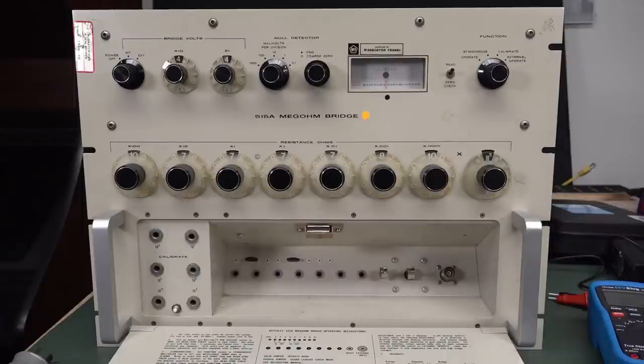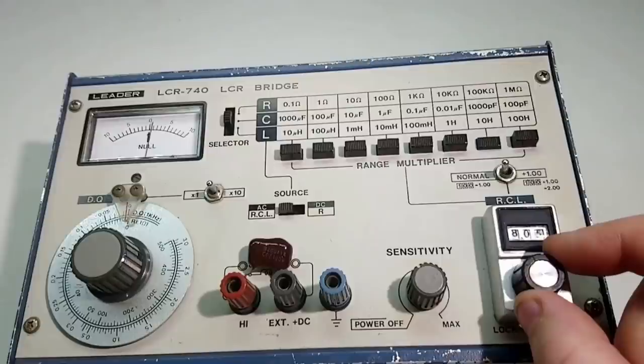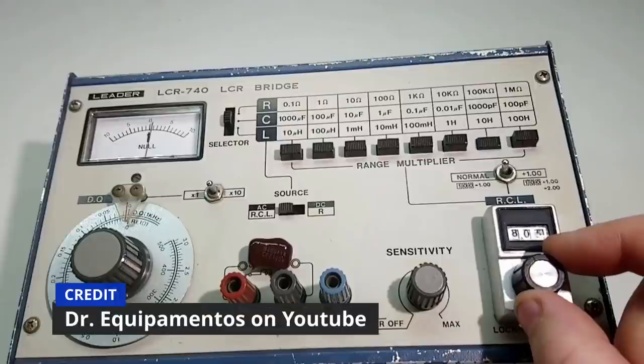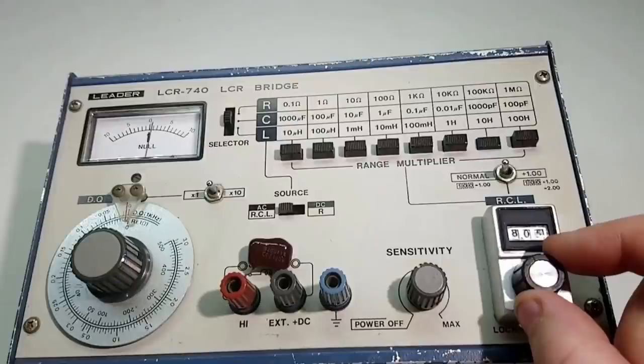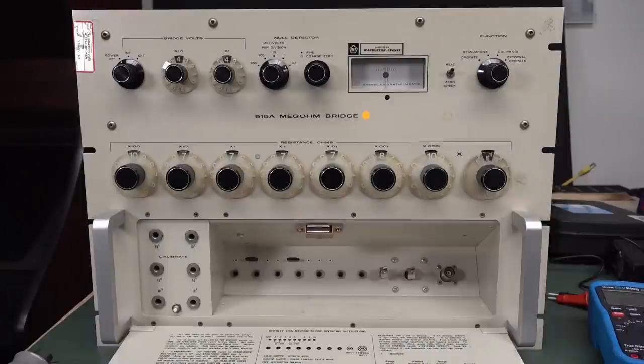Now, Wheatstone bridges were very common before modern multimeters were available. And you can actually measure quite precisely capacitors, inductors, and resistance values. You can get LCR bridges. This one is a resistance bridge only, and it's only designed for high values.